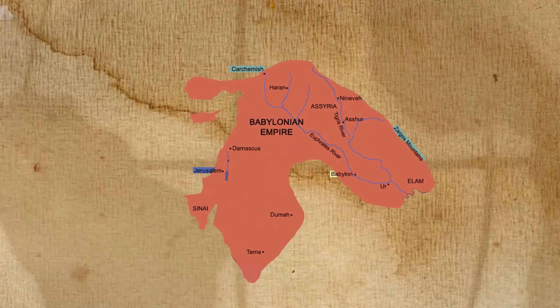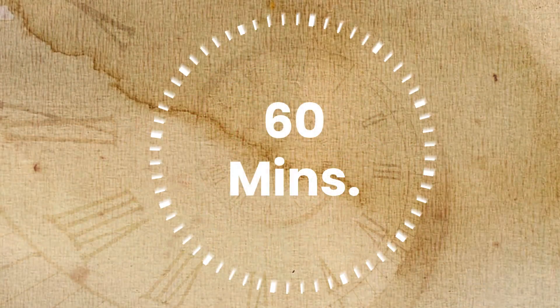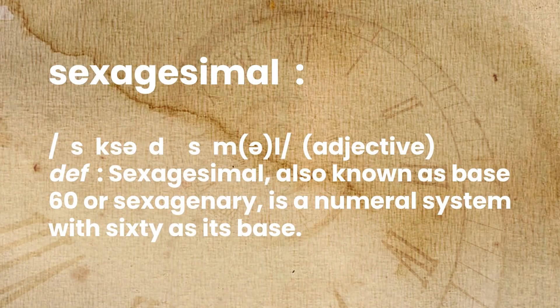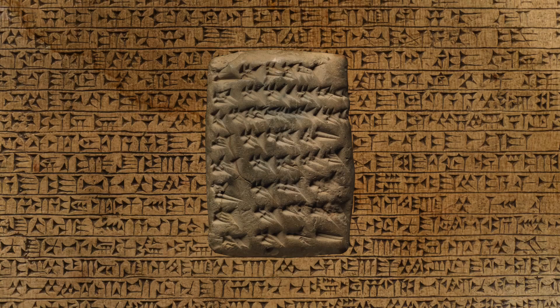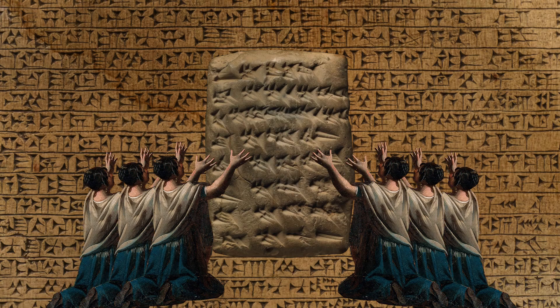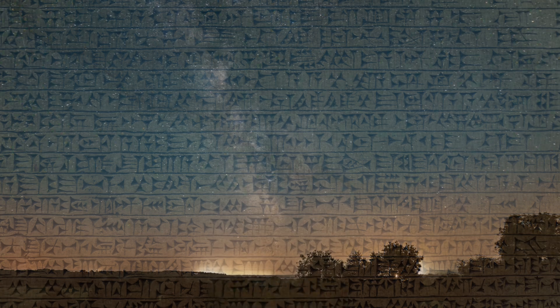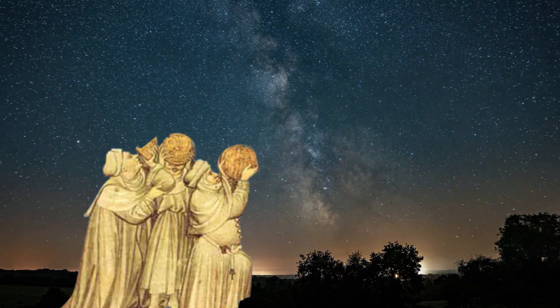It was the Babylonians who first gave the division of the hour into 60 minutes and then a minute into 60 seconds. Babylonians used a sexagesimal system derived from the Sumerian number system used in the early 3500 BC for their calculations and understanding of astronomy.